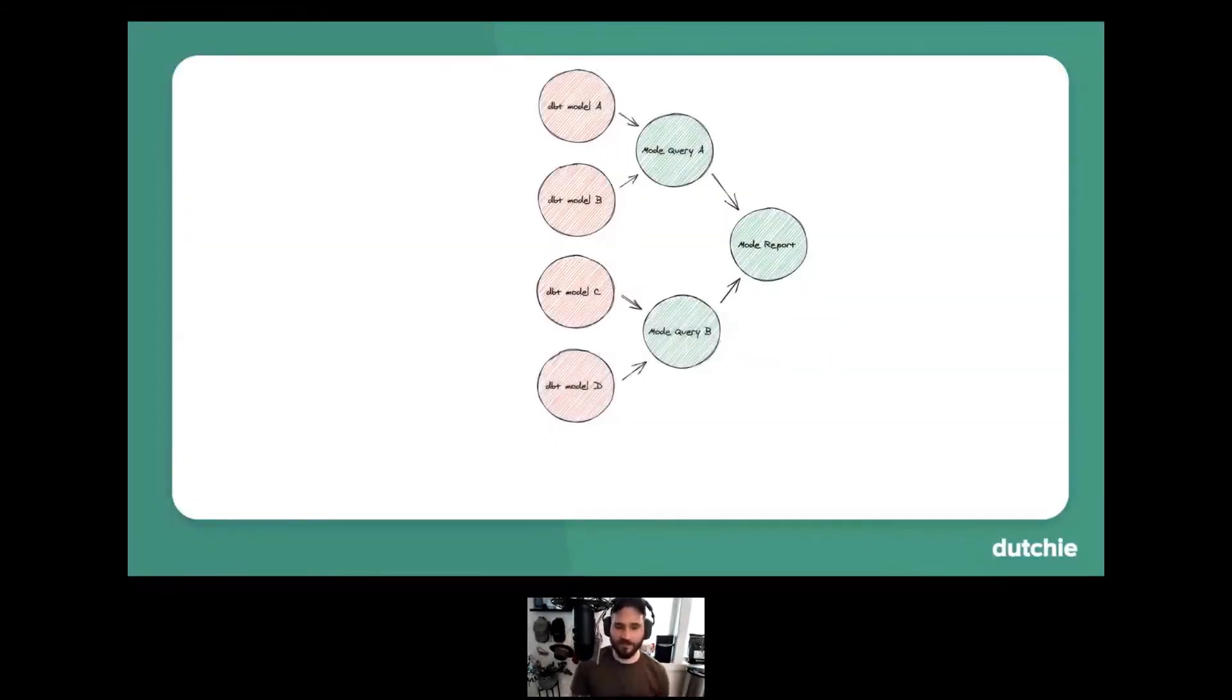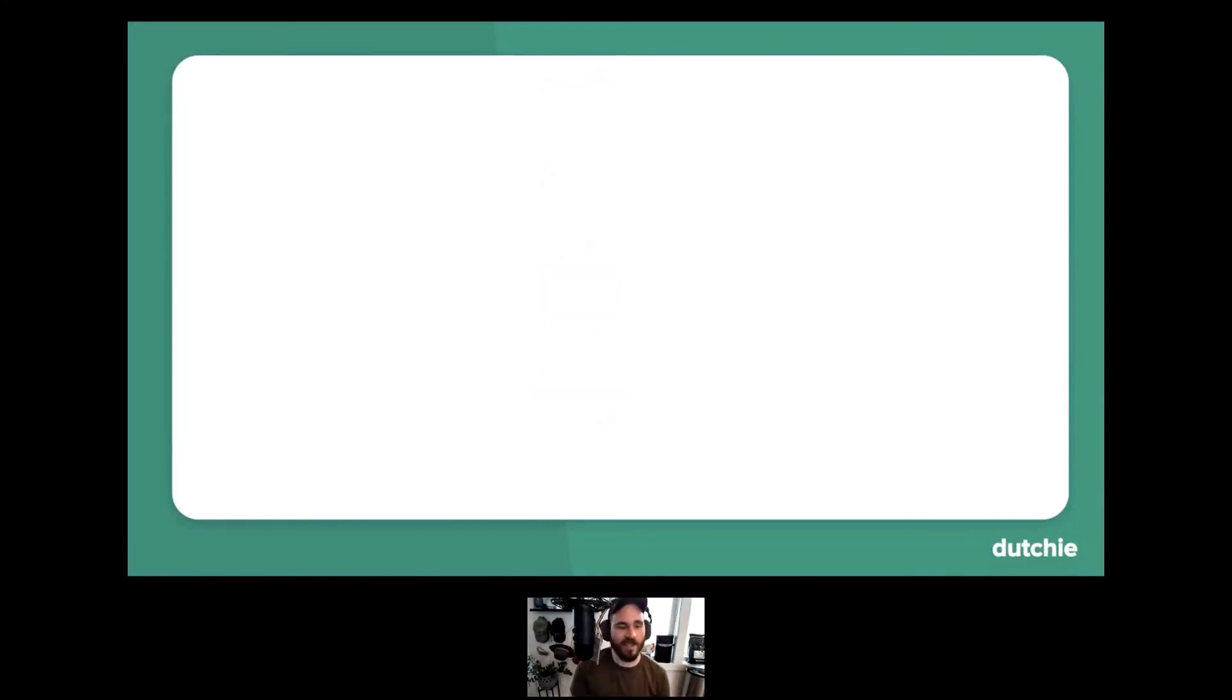What's really nice about running these two processes in tandem, the mode pruning process and the DBT model pruning process is that they actually synergize quite nicely together. You can see here that it effectively over time creates a really nice cascading effect where as we start to prune more and more mode reports, more and more DBT models also automatically become candidates for pruning.